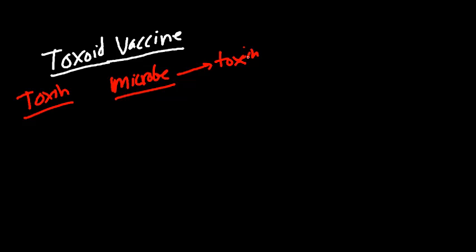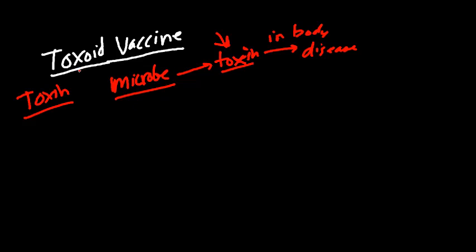Select microbes will secrete toxins, and these toxins will go into the body and produce disease. In this case, the microbe didn't cause the disease — it would be the toxin that causes the disease. So the body needs to neutralize this toxin, and how do we do that? It's through a toxoid vaccine. We're going to introduce an inactivated toxin — a toxin that does not cause symptoms, doesn't cause disease.